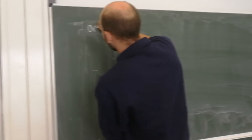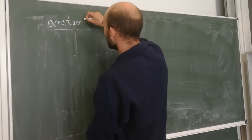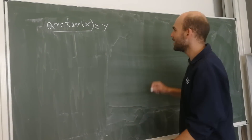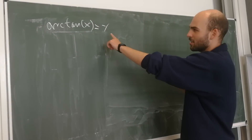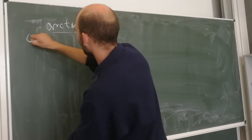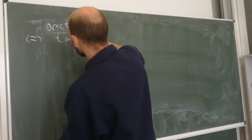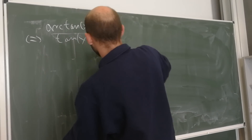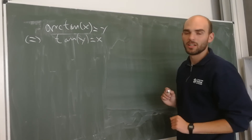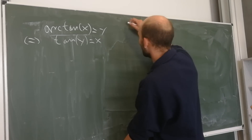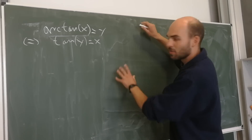The arctangent is a complicated function to differentiate, but no problem — we have our special math techniques. We know that arctan(x) is equal to y, so let's rewrite this as tangent of y equals x.